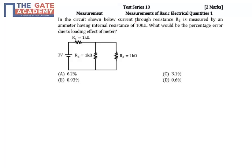The ammeter has an internal resistance of 100 ohms. I'll draw the circuit: here's the voltage source of 3 volts, R1, R2, I'll put R3 here and the ammeter here. So this is R1, this is R2, and this is R3.